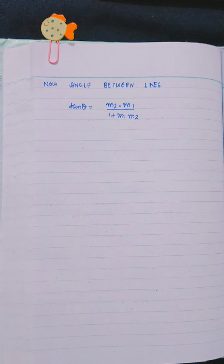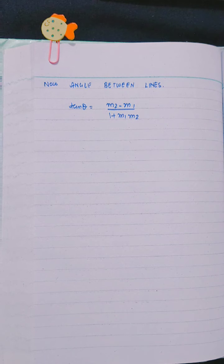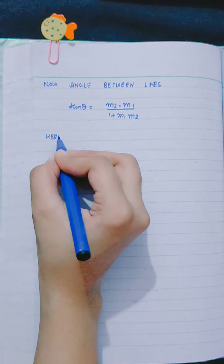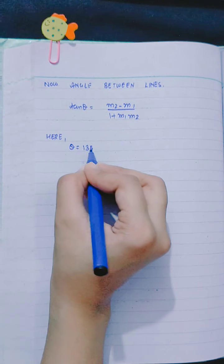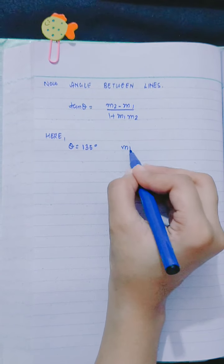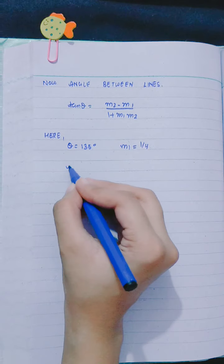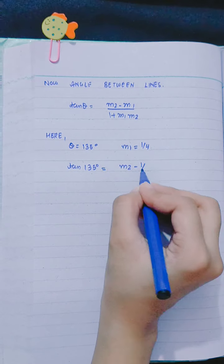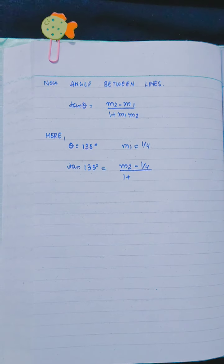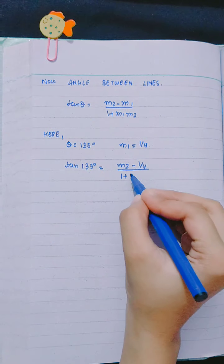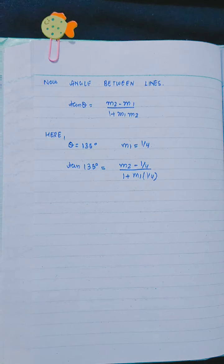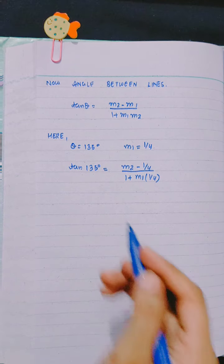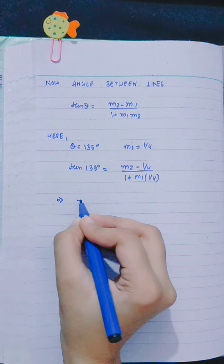Now, angle between lines: tangent theta equals m2 minus m1 divided by 1 plus m1 times m2. Here, theta equals 135 degrees and m1 equals 1/4. Tangent 135 degrees equals m2 minus 1/4 divided by 1 plus 1/4 times m2. Tangent 135 degrees is -1.